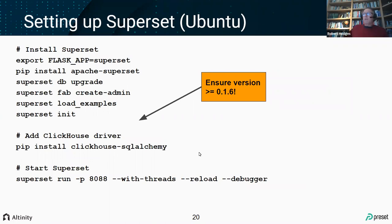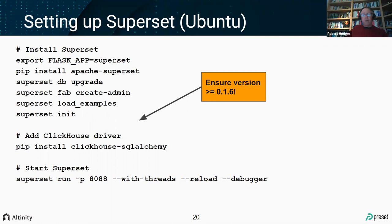Setting up is totally easy. Follow the Superset install instructions — I do this in a virtual environment on Ubuntu. Before starting Superset, run pip install clickhouse-sqlalchemy, getting version 0.1.6 or greater which includes the bug fixes. Then start Superset and you're off and running, ready to connect to ClickHouse through the UI.